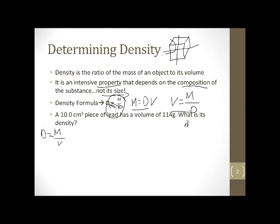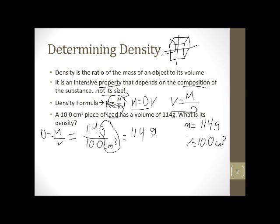We're going to write over here what we know. We know that the mass is equal to 114 grams. The volume is equal to 10.0 cubic centimeters, and I'm writing it with the units. Now I just plug and chug. So my mass is 114 g, my volume is 10.0 cubic centimeters. Now first I'll do the number part of my answer. 114 divided by 10.0 is 11.4. I have three sig figs in each, so my answer is three sig figs. My units are grams per cubic centimeter. So the density of this piece of lead is 11.4 grams per cubic centimeter.